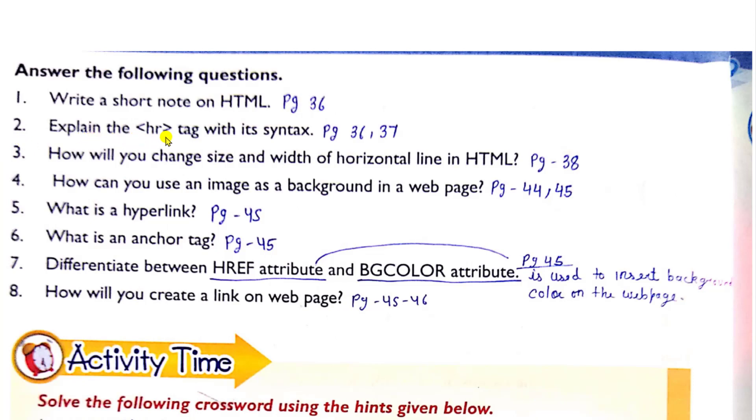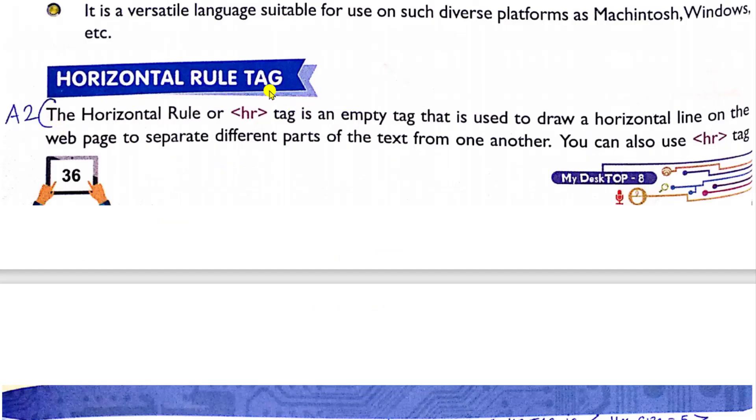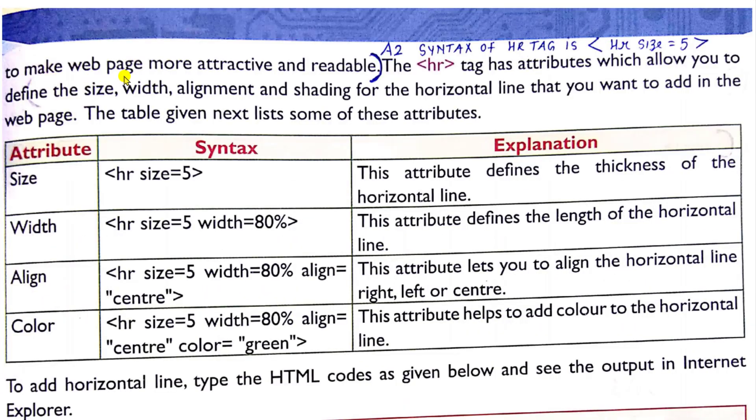Now second question. Explain the HR tag with its syntax. So this answer is on page number 36 and 37. The horizontal rule or HR tag is an empty tag that is used to draw a horizontal line on the web page to separate different parts of the text from one another. You can also use HR tag to make web page more attractive and readable. Then syntax of HR tag is HR size equal to five. You have to write this also. These all are syntaxes.